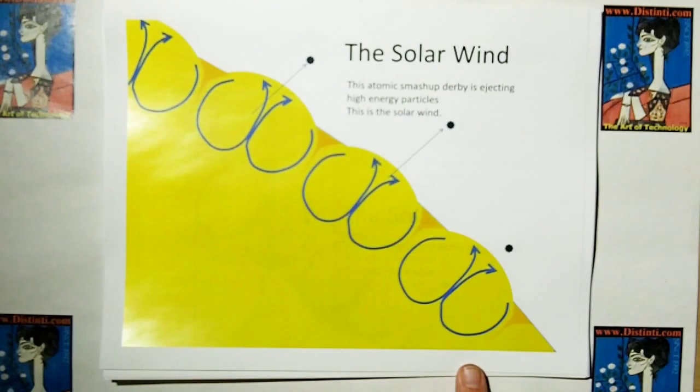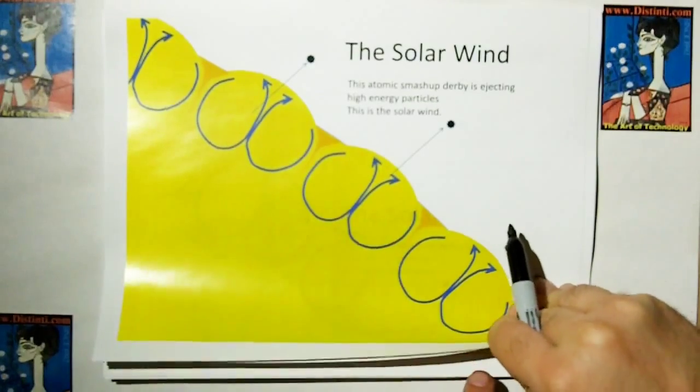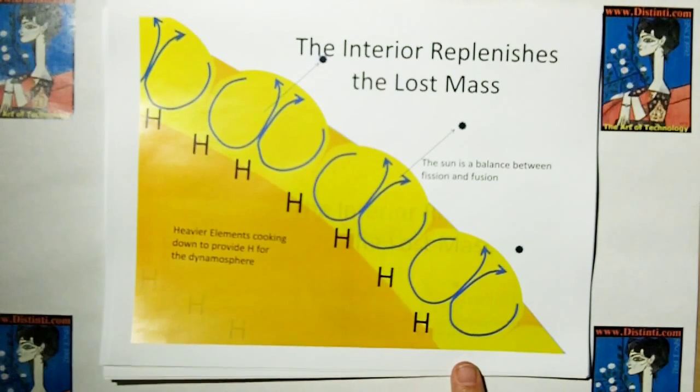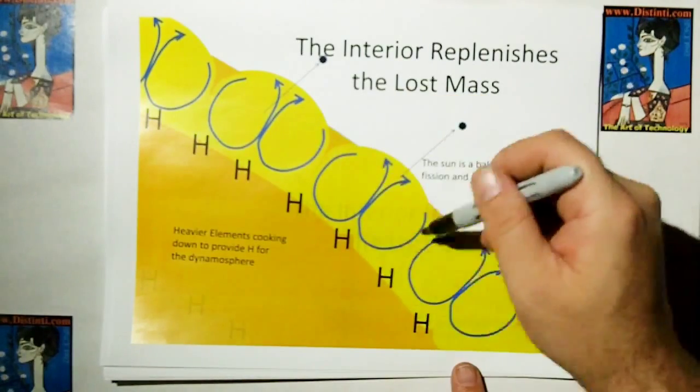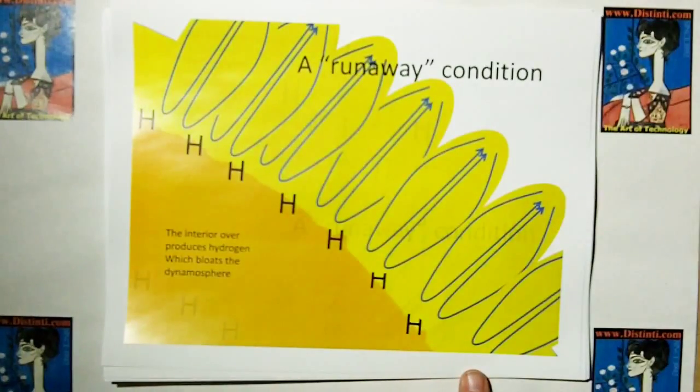But the problem we run into is that this fusion-fission process breaks apart so many particles, and a lot of broken smash-up derby components of electric particles get thrown off the Sun in the solar wind. And so what we need is a way to replace the stuff. And what we have now to replace the lost mass is the interior of the Sun works just like the interior of the Earth, where heavier elements are cooking down into lower and lower elements. And because the Sun is massive, that process happens extremely fast. And elements are cooking all the way down to hydrogen, and that hydrogen replaces, replenishes the fuels that's lost.